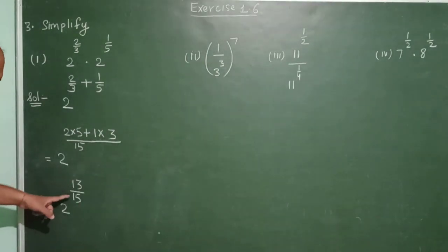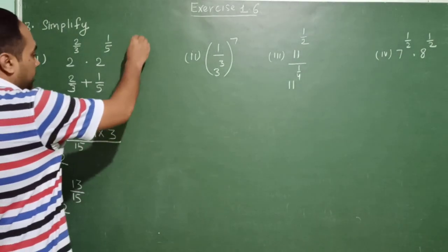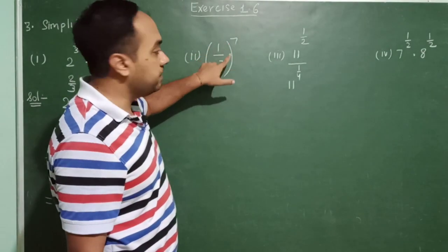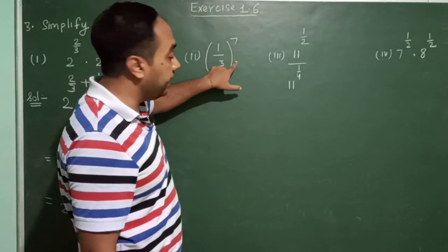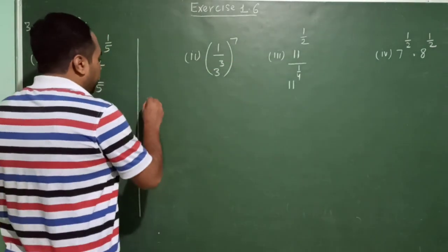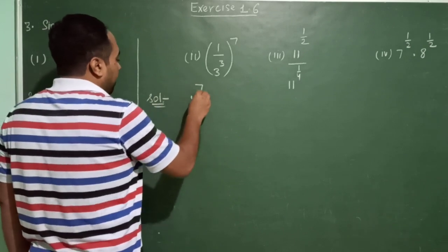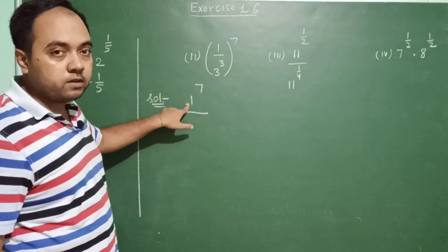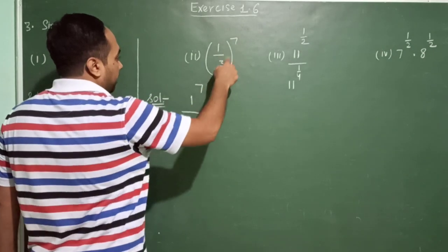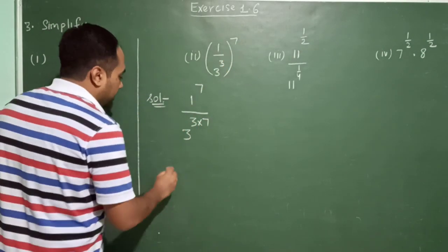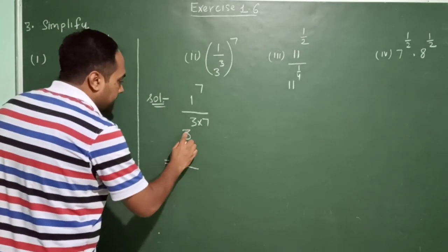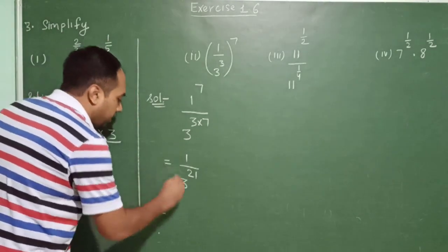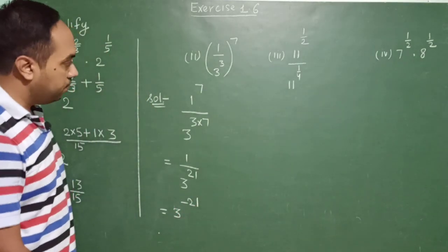The second question: in the numerator it is 1 raised to the power 7, and in the denominator it is 3 raised to the power 3 into 7. Now 1 raised to the power 7 remains 1, since 1 multiplied any number of times is always 1. The 7 power also multiplies with the 3 power, giving 3 raised to the power 21. Taking 3 power 21 to the numerator, the answer is 3 raised to the power minus 21.